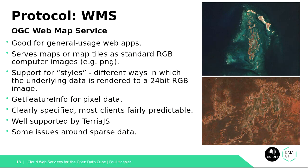WMS is the OGC Web Map Service. It's good for general-purpose web apps. You pass in bounding box coordinates, a coordinate reference system, a layer, a style, and image size in pixels, and you get back a map tile of your requested area in the requested format. It returns standard RGB images — JPEGs, GIFs, or PNGs. We tend to prefer PNGs because they support transparency. It has this concept of styles, which are different ways of rendering the underlying data into a 24-bit RGB image. The original intention in the spec is clearly talking about vector data, like street map data, but when you're dealing with multiband satellite imagery you can do much more exciting things with that concept.